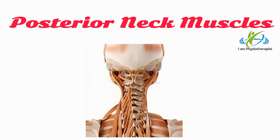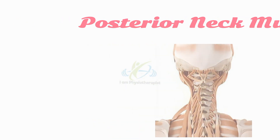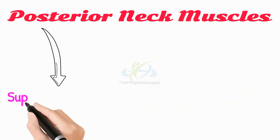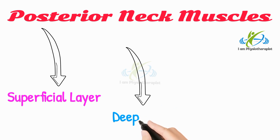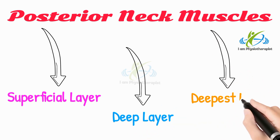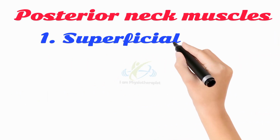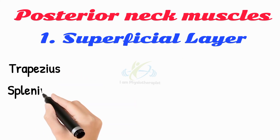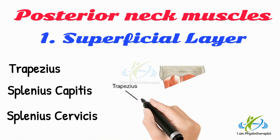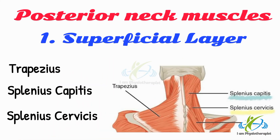The posterior aspect of the neck is covered by muscles that connect the skull to the spinal column and pectoral girdle. These muscles can be divided into three layers: superficial layer, deep layer, and deepest layer. The muscles included in the superficial layer are the trapezius, splenius capitis, and splenius cervicis.